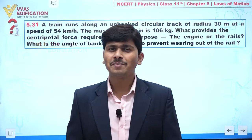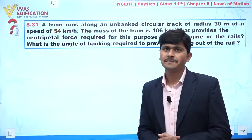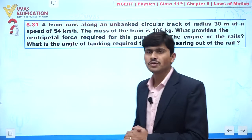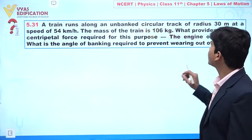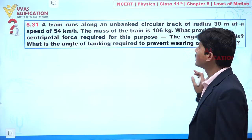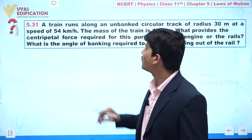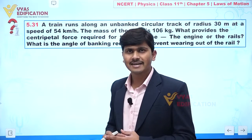Now we are going to discuss question number 5.31. In this question, it is given to you: a train runs along an unbanked circular track of radius 30 meters at a speed of 54 kilometers per hour.